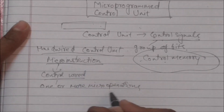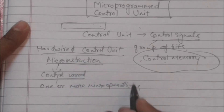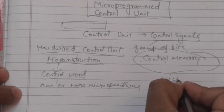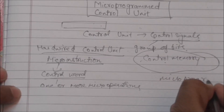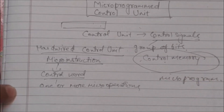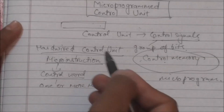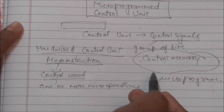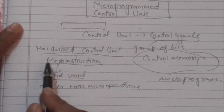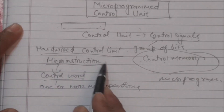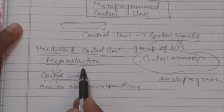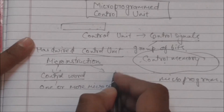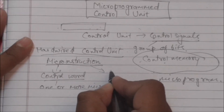A sequence of micro-instructions forms a micro-program. For each computer instruction there is a micro-program in control memory. Some bits of a micro-instruction specify micro-operations, and some bits of a micro-instruction are used to generate the address of the next micro-instruction.